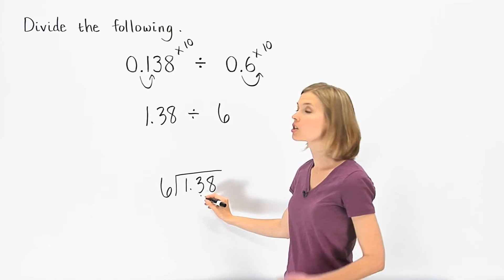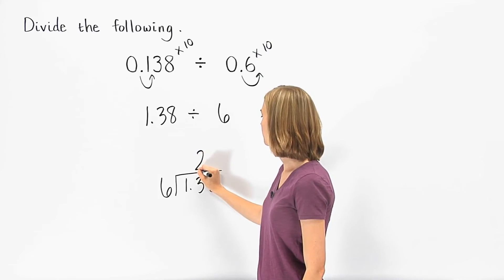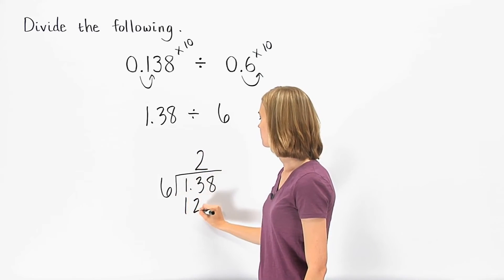6 divides into 13 two times, so we write the 2 above the 3. 2 times 6 is 12, and 13 minus 12 is 1.